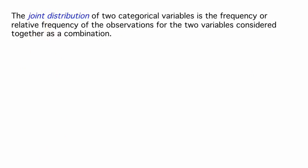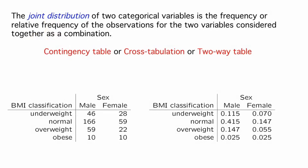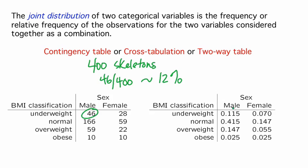We can see the joint distribution of BMI classification and sex in a contingency table, sometimes called a cross-tabulation or a two-way table, since we have two categorical variables. In the contingency table, we classify our 400 skeletons two ways — by BMI classification and by sex. The table contains the counts or percentages for males and females across each of the BMI classifications. For example, 46, or approximately 12%, of the 400 skeletons are underweight males, and 28, or about 7%, are underweight females.